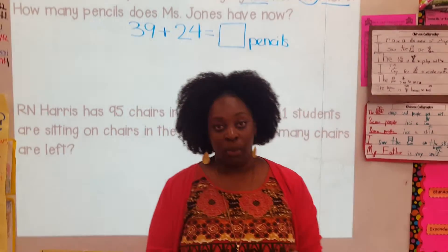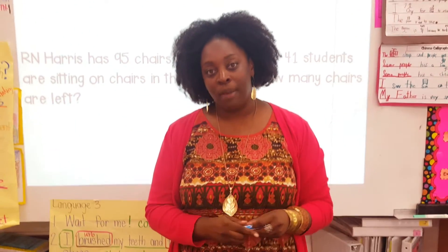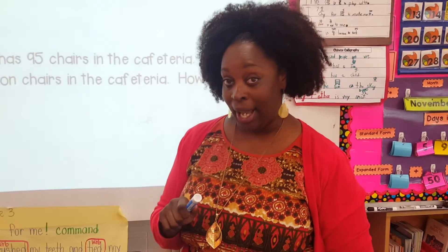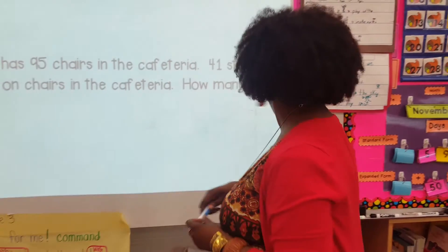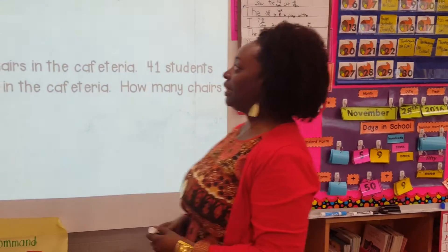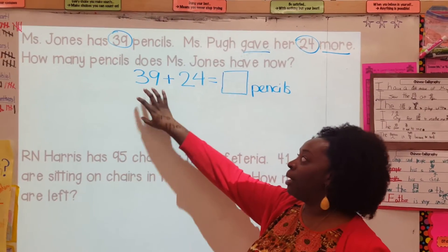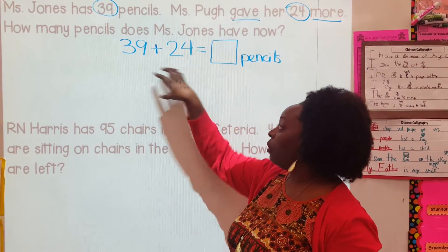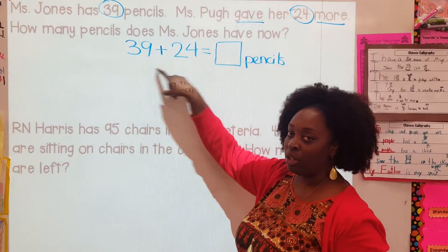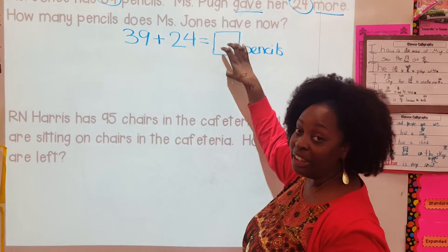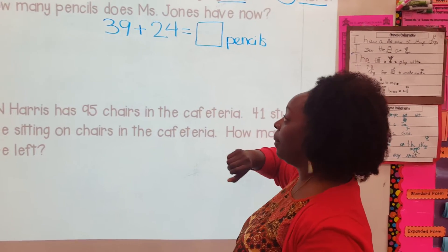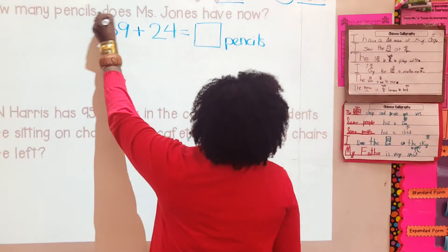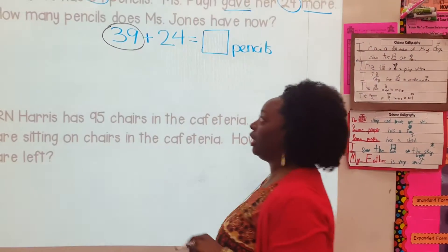The reason we're practicing this strategy: we've learned a lot of different ways to solve story problems, but today I really want you to think about using a number line to help you solve your story problems. Let's look at these numbers. Whenever we're using our number line, I want you to always start with the larger number. What's our larger number? 39.